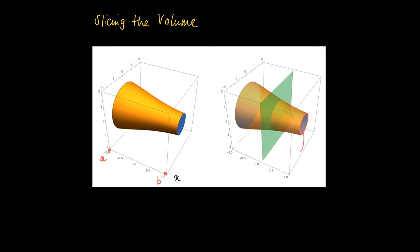On the right-hand side you see that for a fixed value x, the intersection with the solid gives rise to some area which has size A(b).